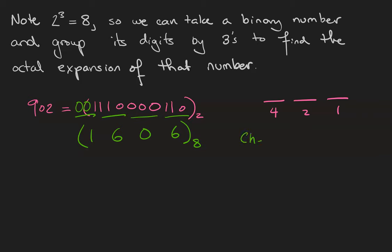Let's check our work. 1 × 8³ + 6 × 8² + 6, you can check for yourself, is equal to 902.